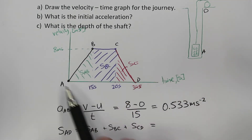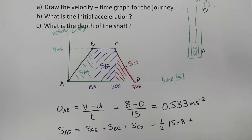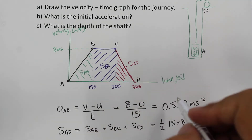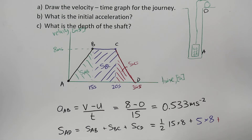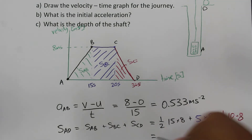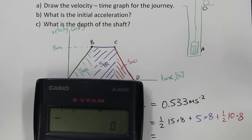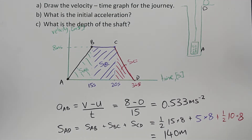We can now calculate each area. S_AB equals one-half times 15 times 8. S_BC equals 5 times 8. S_CD equals one-half times 10 times 8. Plugging these into a calculator: 0.5 × 15 × 8 + 5 × 8 + 0.5 × 10 × 8, the total distance is 140 meters. That is the depth of the shaft.